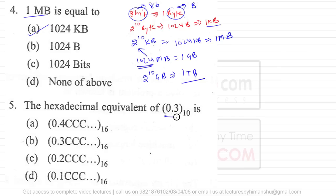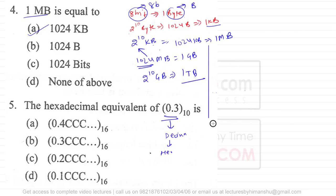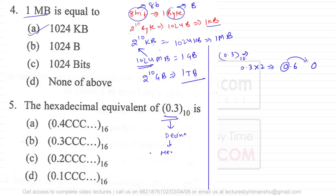The next question asks for the hexadecimal equivalent of 0.3 base 10. The best way is to first convert to binary, then to hexadecimal. We start by multiplying by 2: 0.3 × 2 = 0.6, first digit is 0. Then 0.6 × 2 = 1.2, second digit is 1. Then 0.2 × 2 = 0.4, digit is 0.